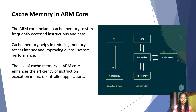The ARM core includes cache memory to store frequently accessed instructions and data. Cache memory helps in reducing memory access latency and improving overall system performance.